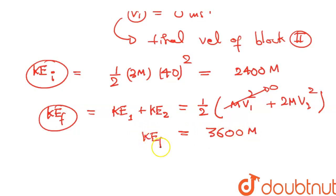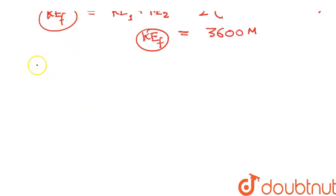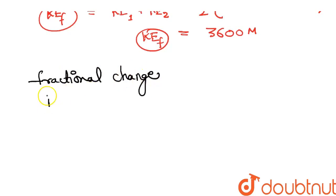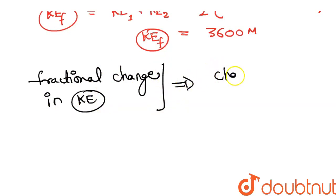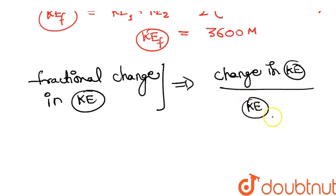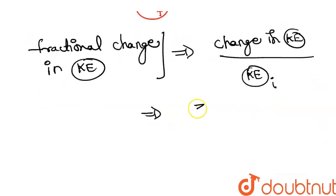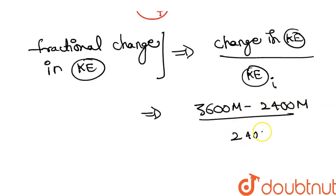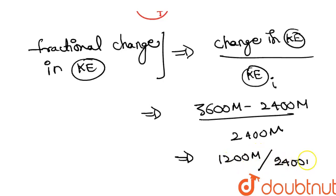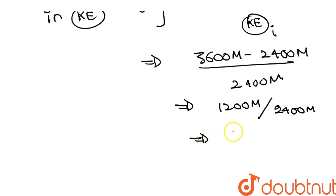Now we can calculate the fractional change in kinetic energy easily. Fractional change = (KE_final − KE_initial) / KE_initial = (3600m − 2400m) / 2400m = 1200m / 2400m = 1/2. So clearly our answer is 1/2.